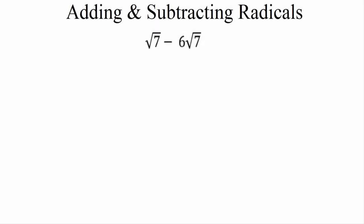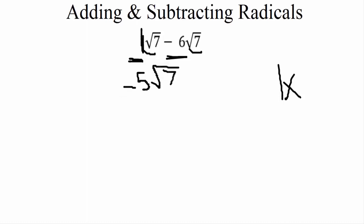Next example: square root of 7 minus 6 square roots of 7. We confirm they have the same radical, so we subtract the numbers in front. Similar to a variable like x, it's understood there's a 1 in front of the first radical. So we have 1 minus 6. Using the integer rule: if you have $1 and spend $6, you're down $5 — you're negative 5. Drop down the square root of 7, giving us negative 5√7.